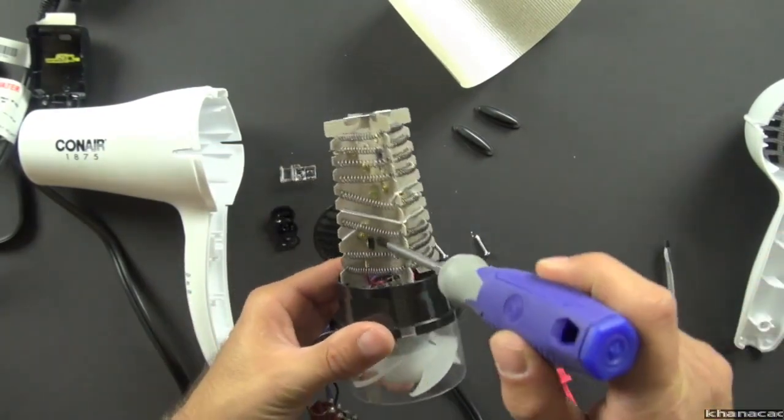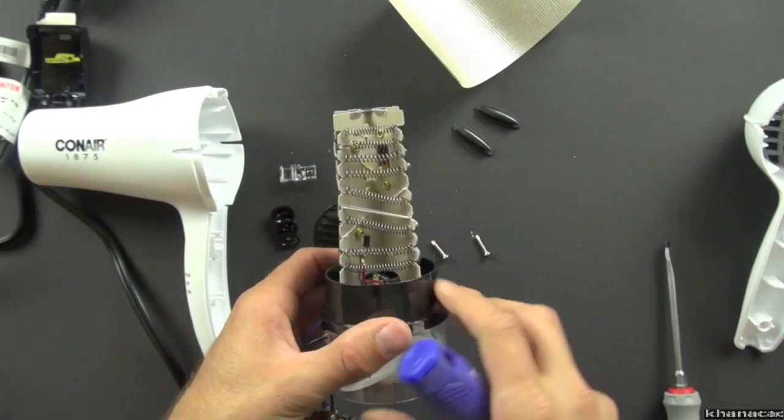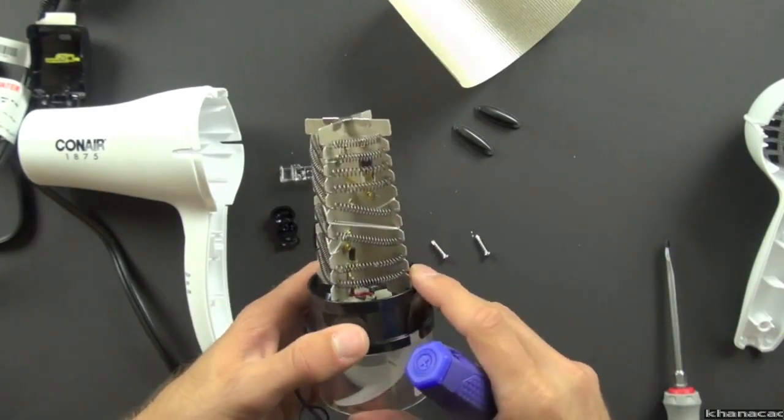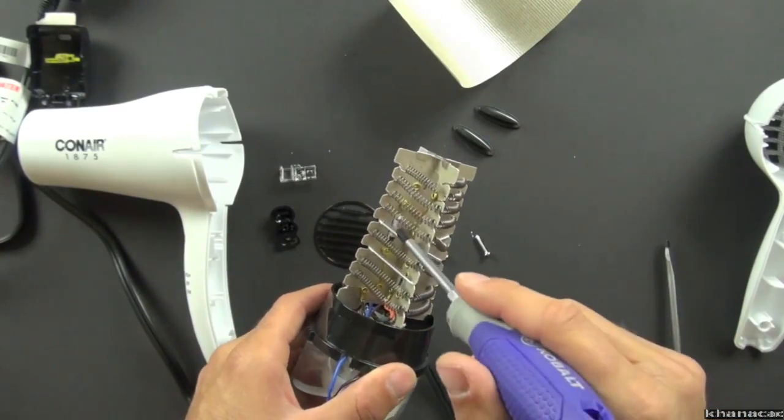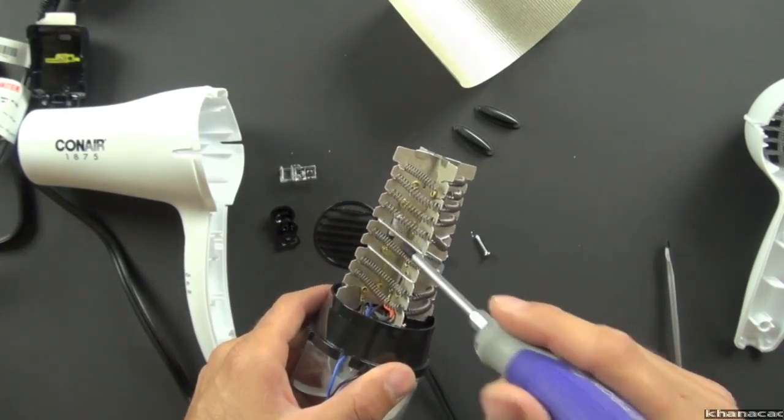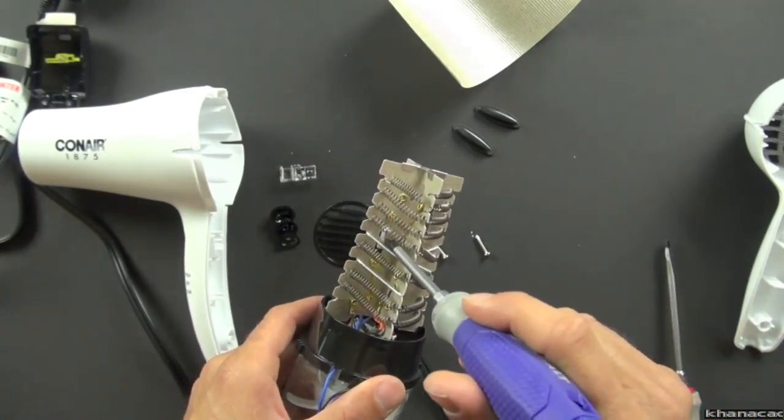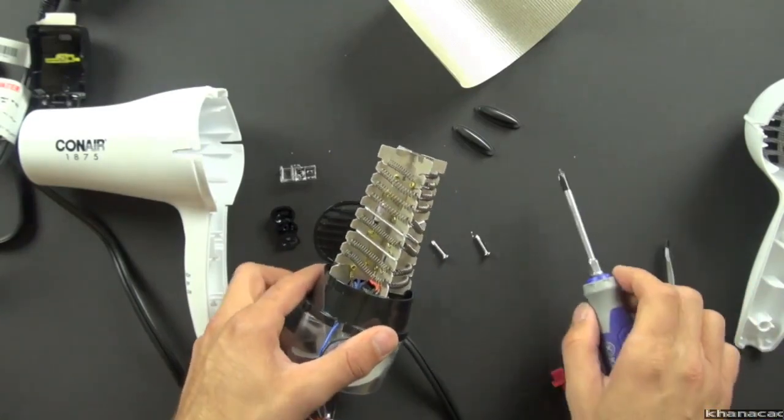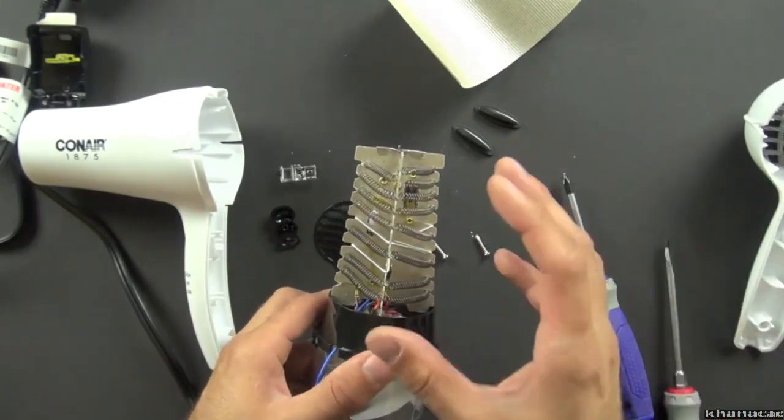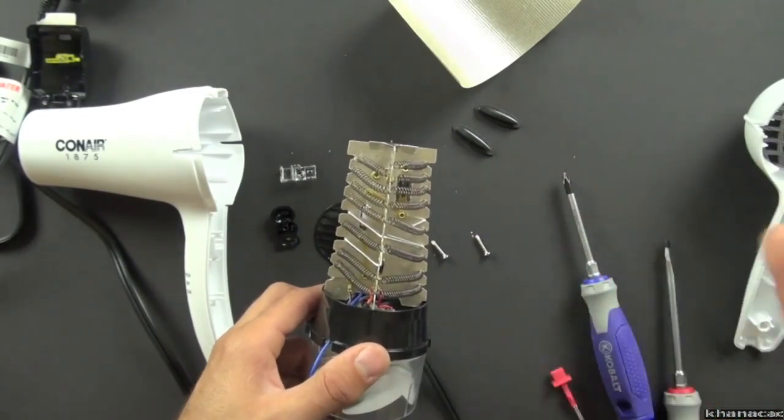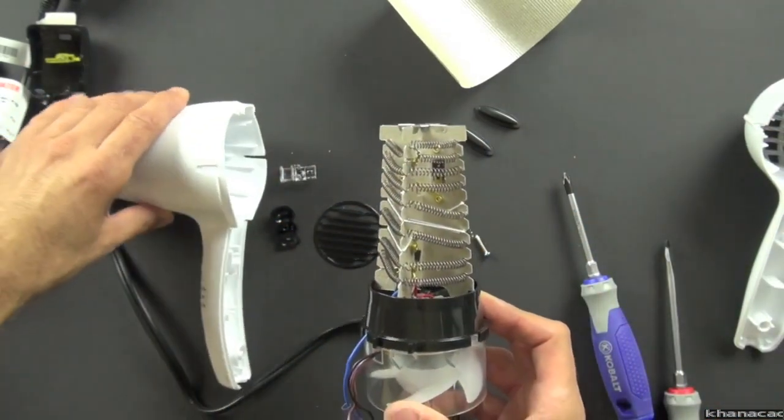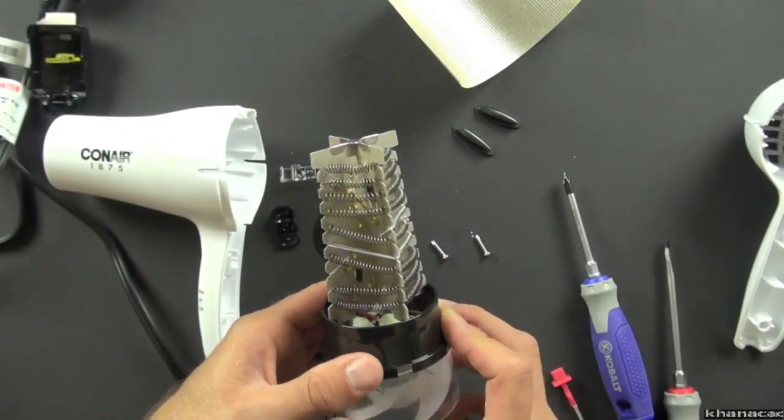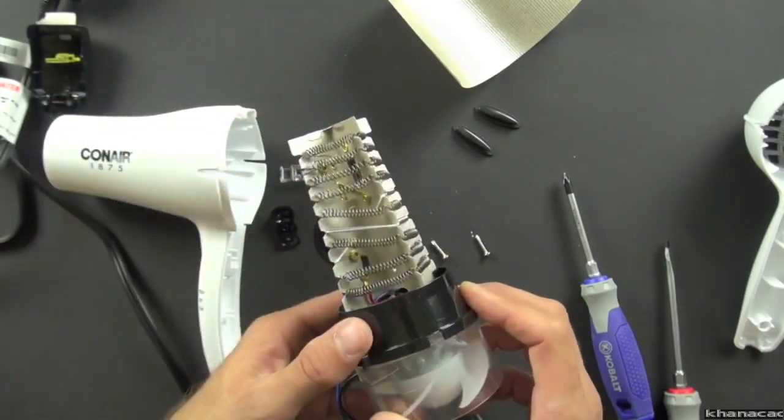And you can see we also have a diode right here in line that just controls the flow of electricity. It's like a little electrical valve. And then we have a thermal fuse. This is called a thermal fuse. And the thermal fuse basically is another safety precaution. If temperatures get too high, the fuse will blow and it will shut down the hairdryer and prevent the housing from melting or from the hairdryer from getting too hot and potentially blowing air out that could burn you.